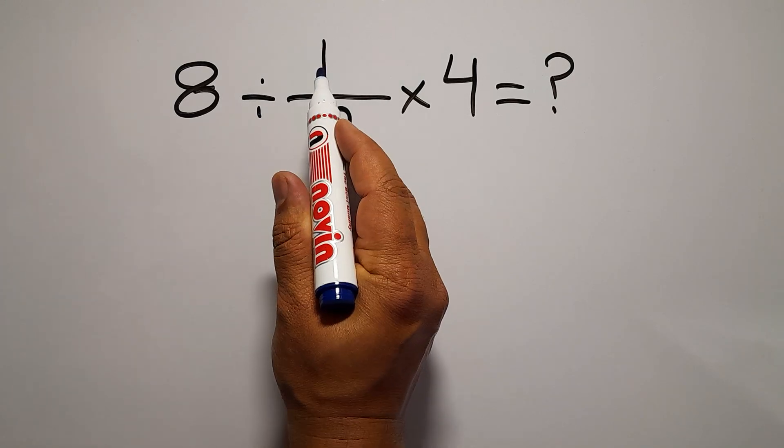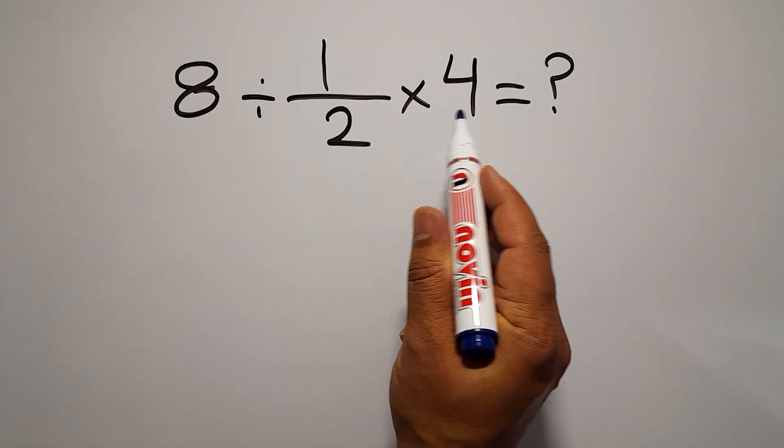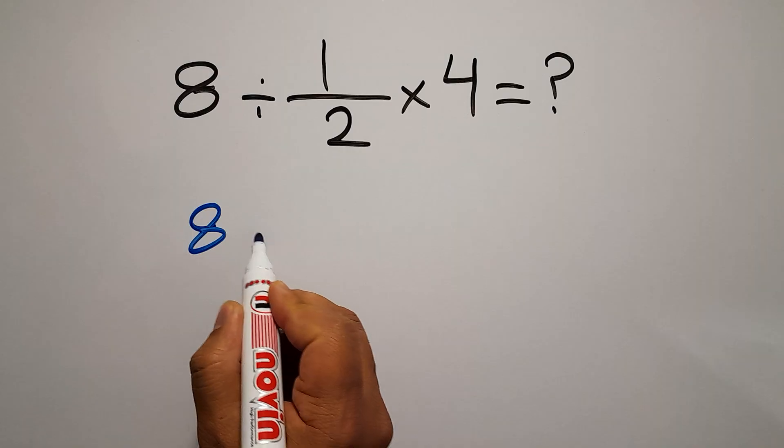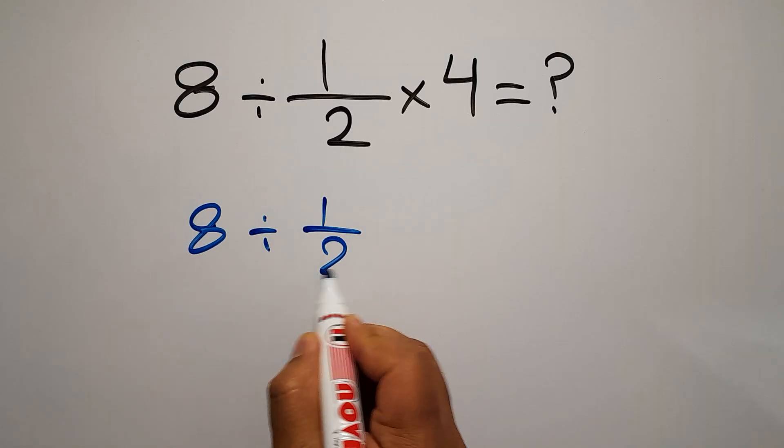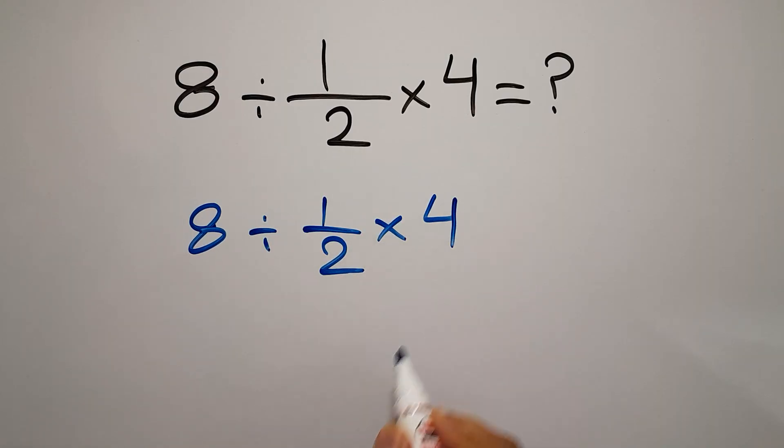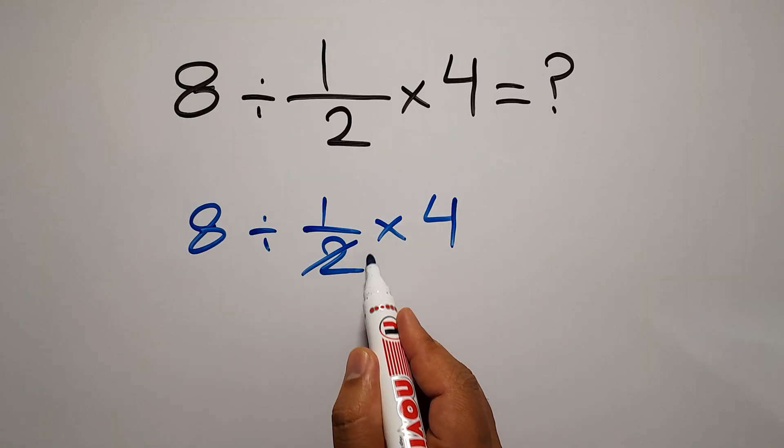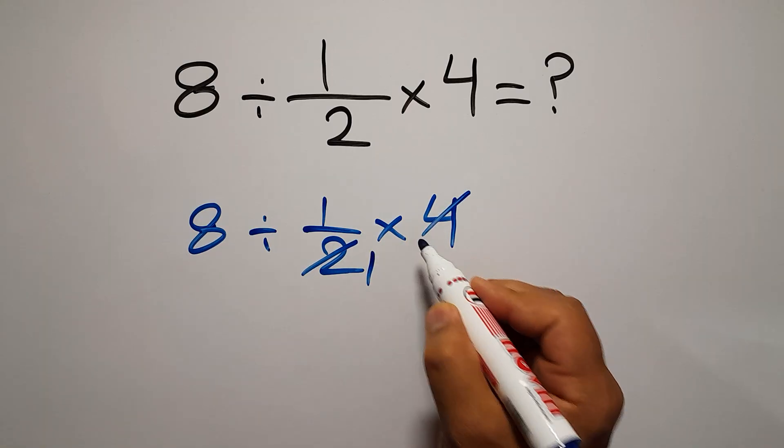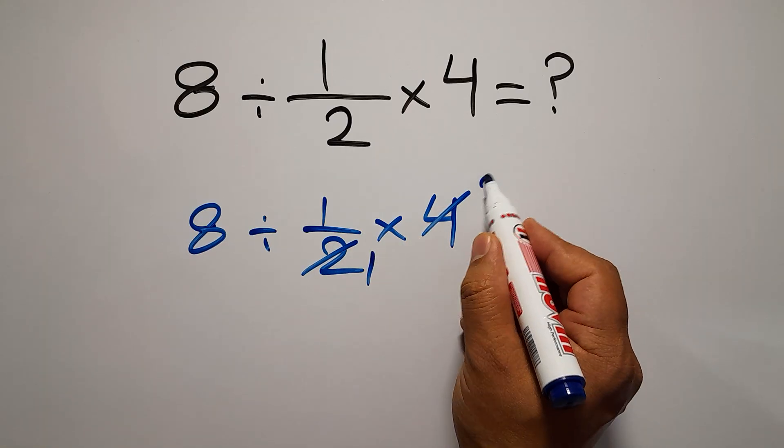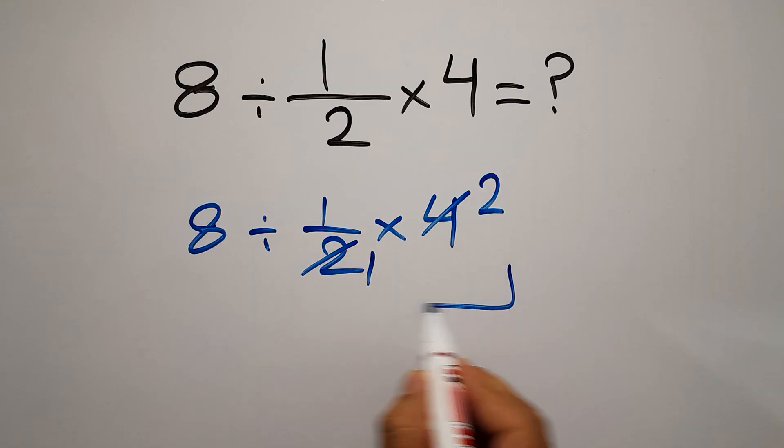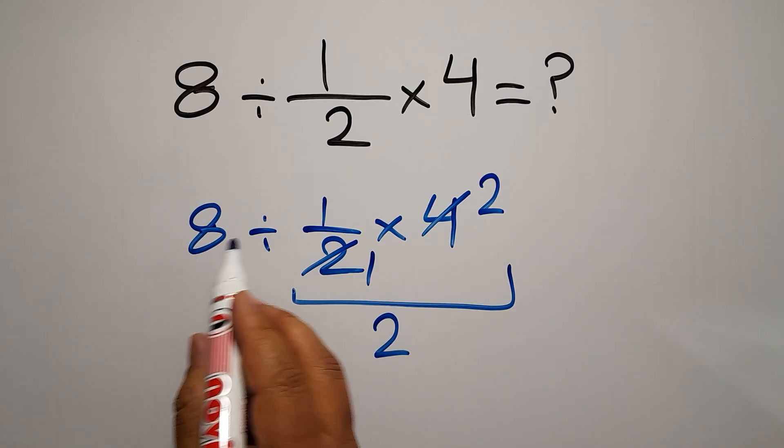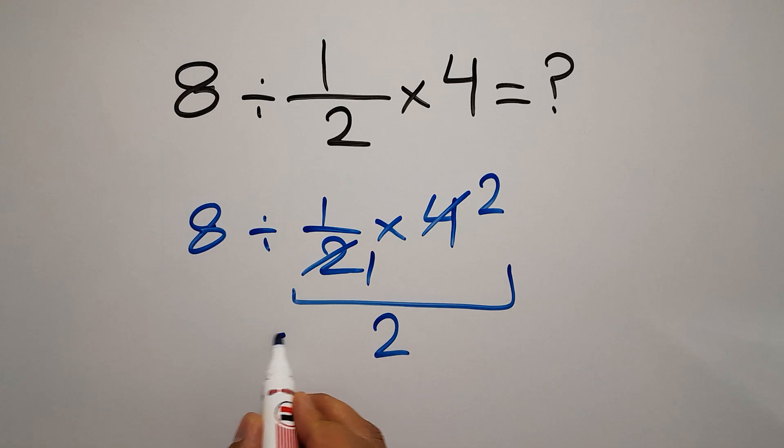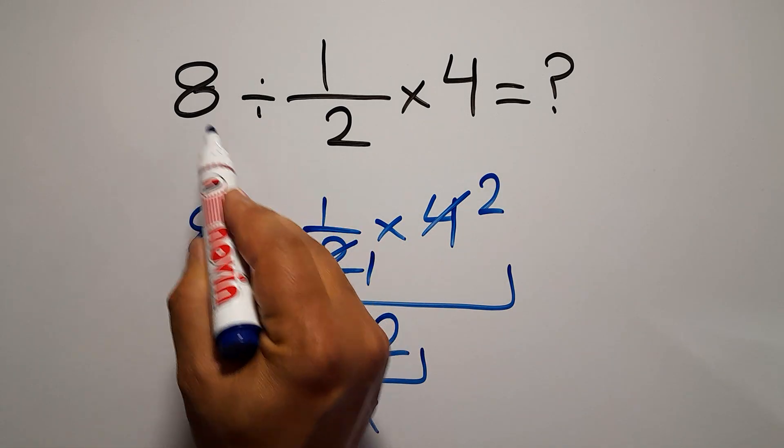8 divided by 1 over 2 then times 4. If we divide 2 by 2 we get 1, and 4 divided by 2 gives us 2, so we have 8 divided by 2 which equals 4. But this answer is not correct.